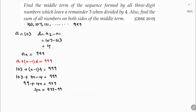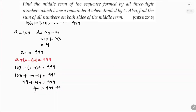So 4n = 999 − 99 = 900, and therefore n = 900 ÷ 4 = 225. There are 225 terms, which is an odd number.